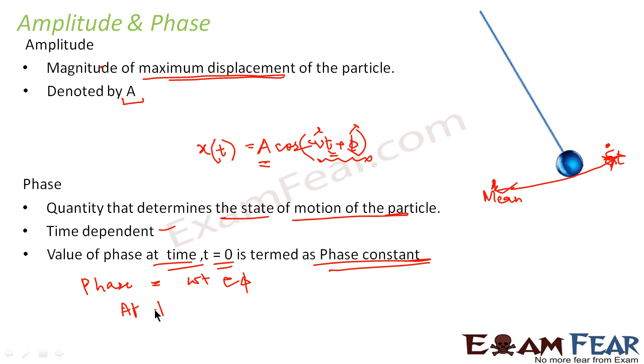Phase is omega t plus phi. Now at t is equal to 0, what will be the value of phase? This omega t will become 0. So we will be left with phi. So this phi is nothing but value of phase at t is equal to 0.